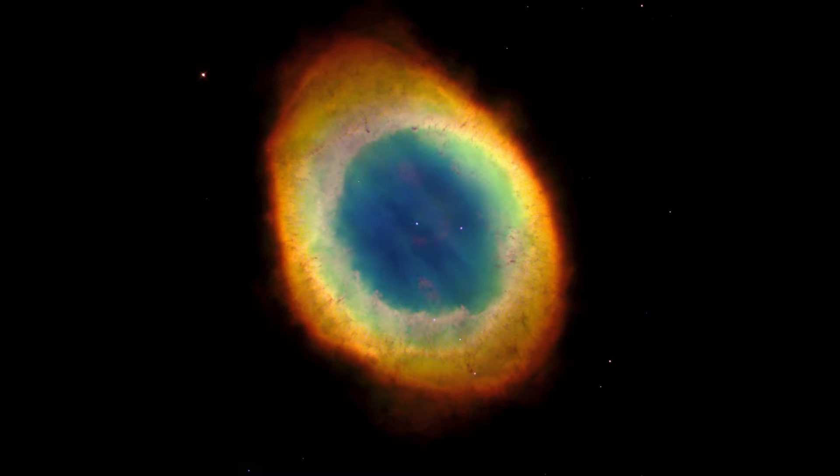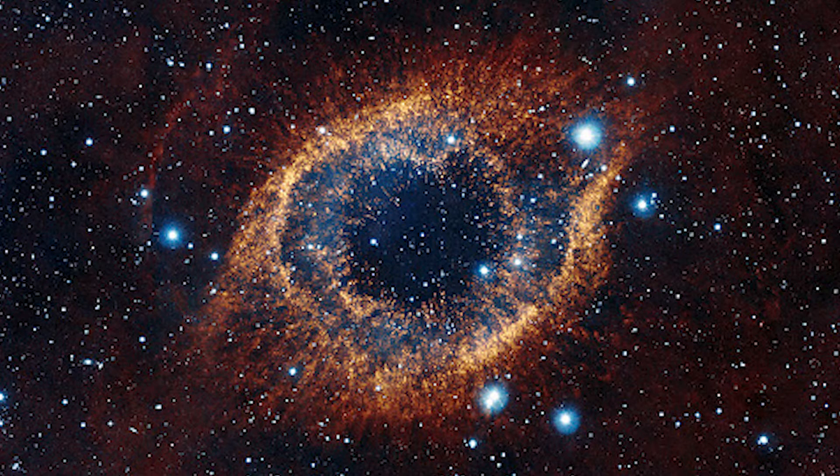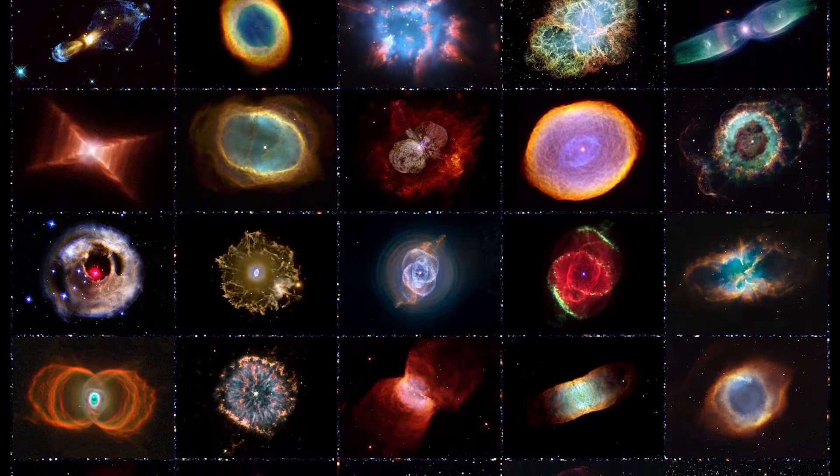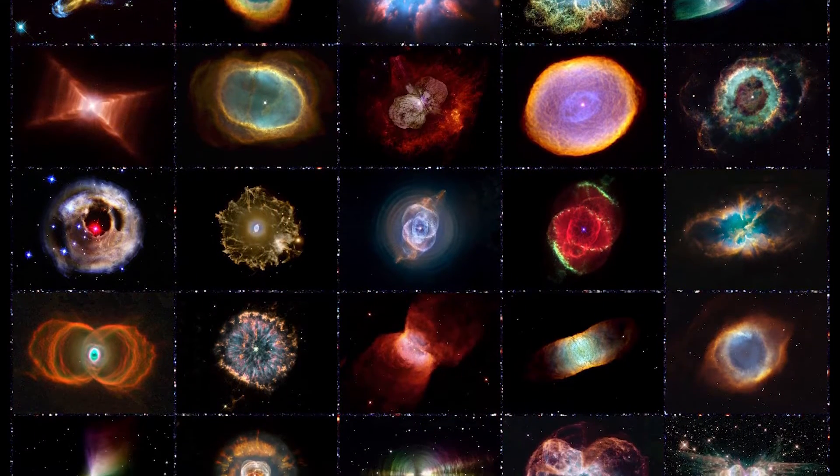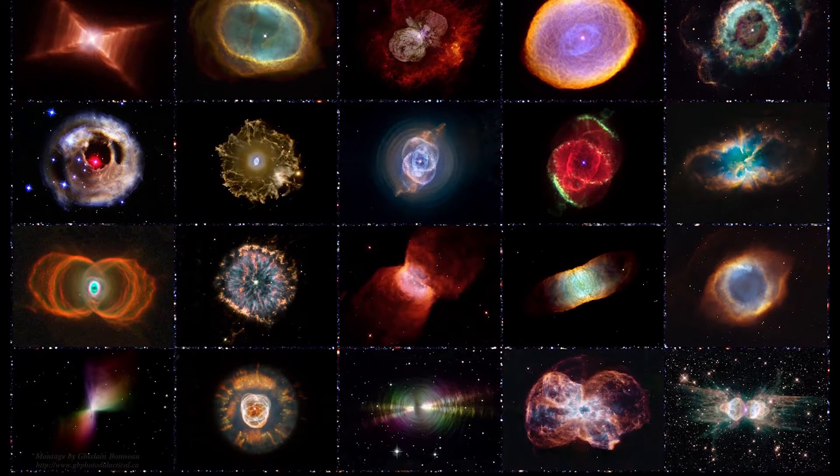The second category are planetary nebulae. These nebulae are gaseous shells that show the remnants of a low-mass star. This is due to the excited radiation of the dying star, thus pushing out the energy, creating a spherical glow.